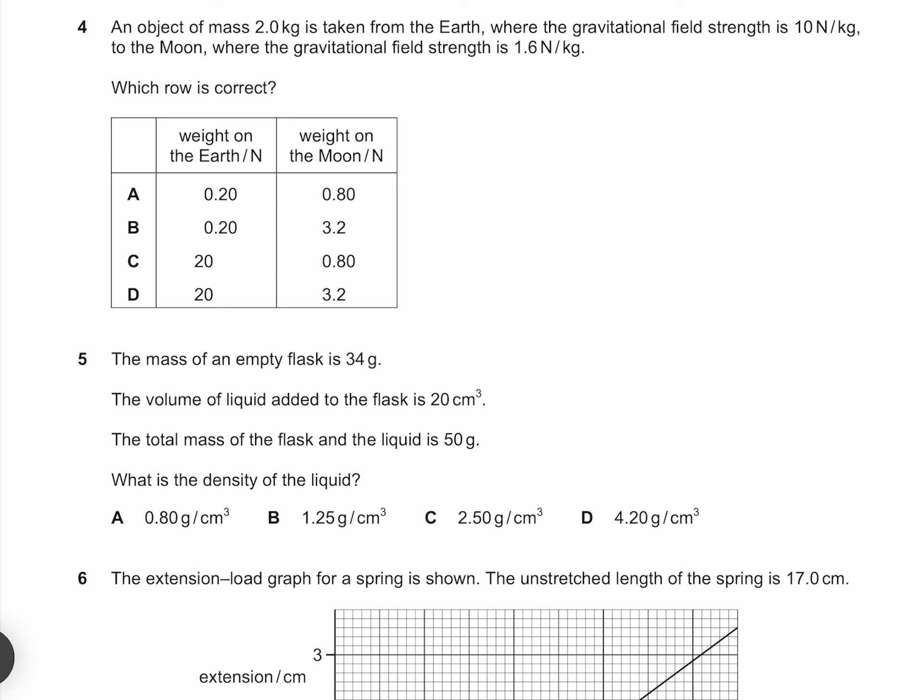An object of mass 2 kilograms is taken from the earth where the gravitational field strength is 10 newtons per kilogram to the moon where the gravitational field strength is 1.6 newtons per kilogram. Which row is correct? And so we have the weight on earth and the weight on the moon. Our weight force is going to be our mass times the gravitational acceleration. For the earth that's going to be 2 times 10, which gives us 20. And for the moon that's going to be 2 times 1.6, which gives us 3.2. And so our answer must be D.